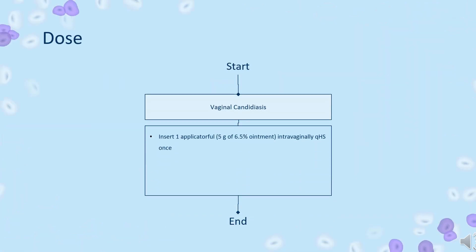Dose — Vaginal Candidiasis: Insert one applicator full (5g of 6.5% ointment) intravaginally once at bedtime (QHS).